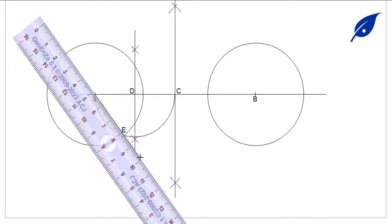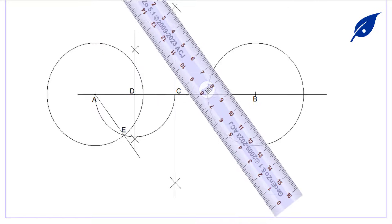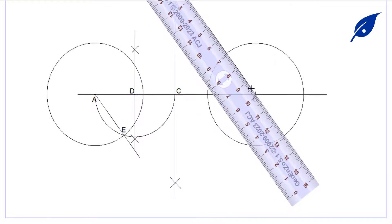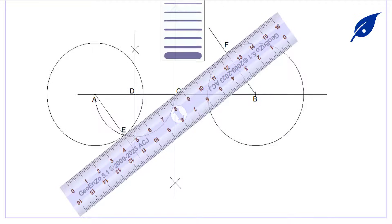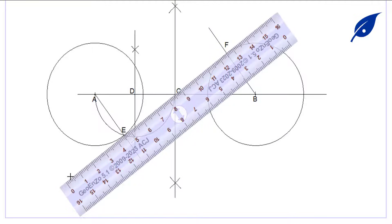With that line, we produce a parallel line radiating from the center of circle B. The edge of the circumference of circle B where it touches will be point F. We then connect points E and F to give us the required tangent.